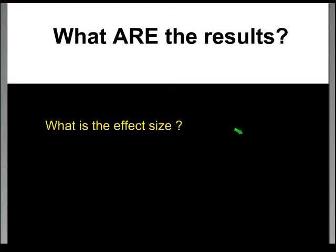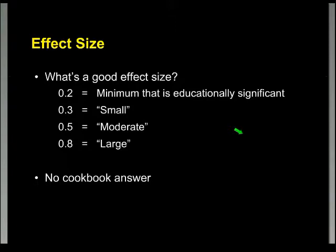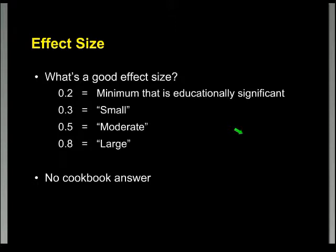So I've got an effect size and a number — what does it mean? Jacob Cohen put words to numbers. He said an effect size of 0.2 is the minimum that's educationally significant, 0.3 is small, 0.5 moderate, and 0.8 large. You'll see these numbers all the time — papers will say 'I report an effect size of 0.54, which is moderate according to the criteria established by Jacob Cohen.' These numbers have entered the vernacular in the same way as P less than 0.05 being considered statistically significant, and these labels probably carry more power than they should.